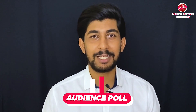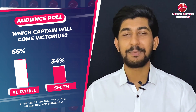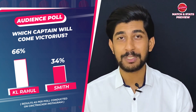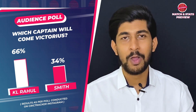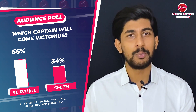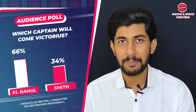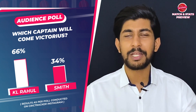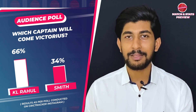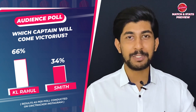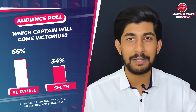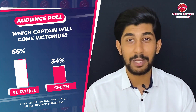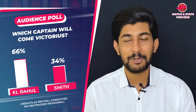Do let me know in the comments what your predictions are going to be. Looking at the CricTracker audience poll, 66% voted for KL Rahul's Punjab to win and only 34% for Steve Smith's Rajasthan. This time I'm going with Steve Smith — Rajasthan look very solid, calm and composed, and with Butler coming in I think they'll have the upper hand. My yesterday's prediction went wrong as Delhi beat Chennai, but let's see if Rajasthan can turn the tables.